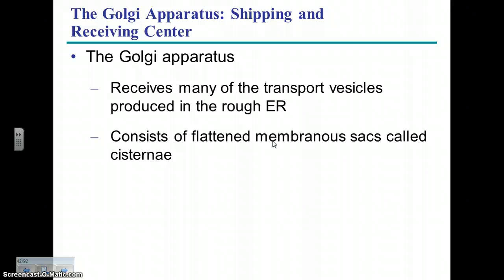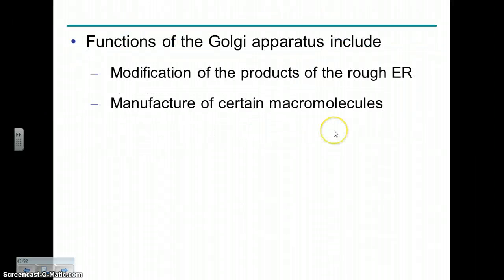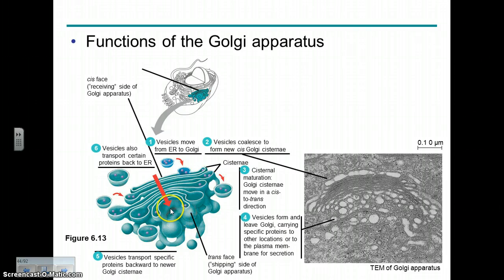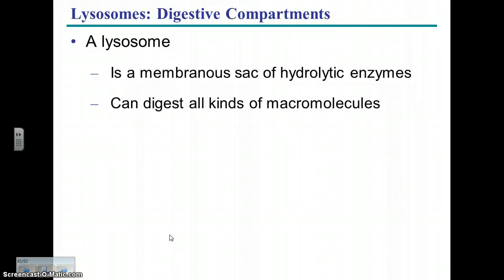Next in the endomembrane system is the Golgi apparatus, which receives transport vesicles from the ER. Its job is to modify those proteins and get them ready. The transport vesicles fuse with the Golgi, the protein is modified inside — sometimes subunits are assembled together — and then the finished proteins come off the other end, the trans face of the Golgi, into a transport vesicle to be taken where needed inside or outside the cell.